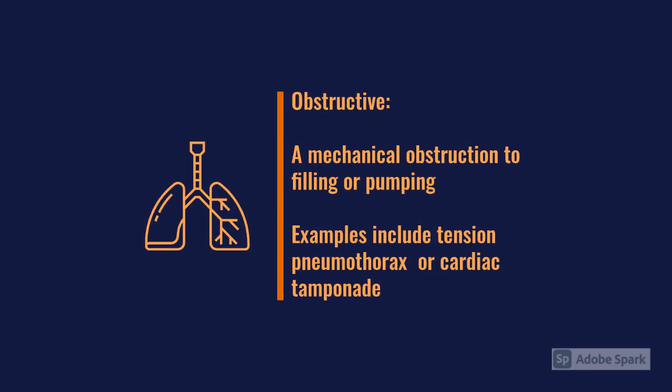Obstructive shock involves something mechanically obstructing venous return — for example, tension pneumothorax causing vena cava compression, or cardiac tamponade, which may present more obviously following traumatic stabbing. In trauma, it's important to think about both hypovolemic and obstructive shock depending on the wound site, and make sure you're ruling out obstructive causes.